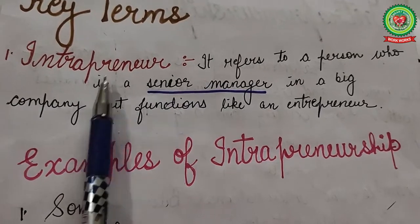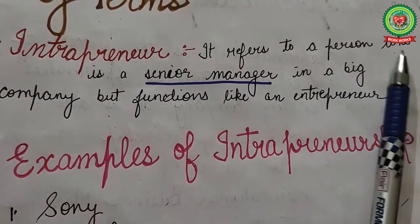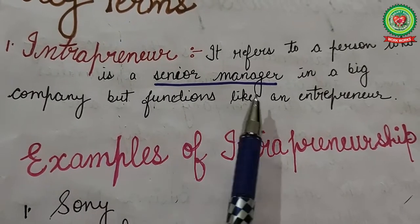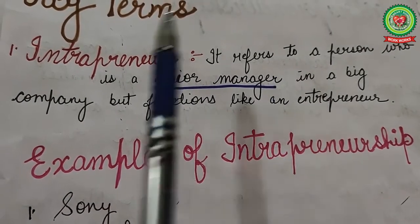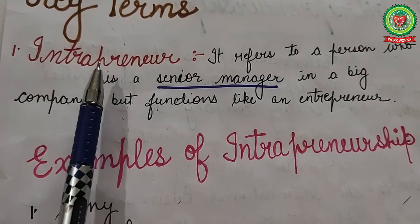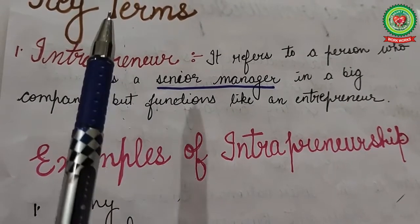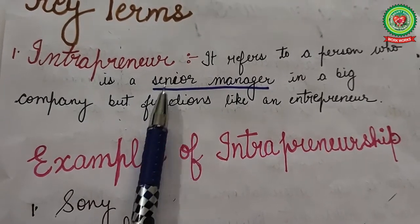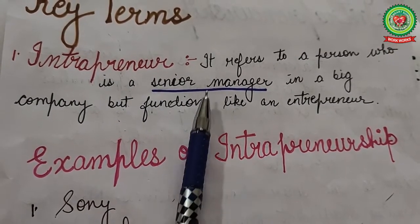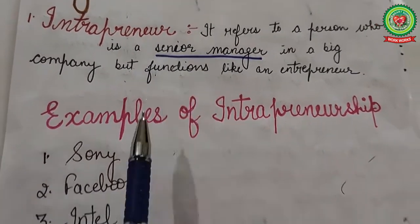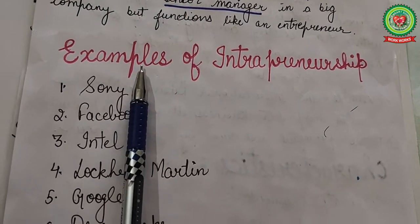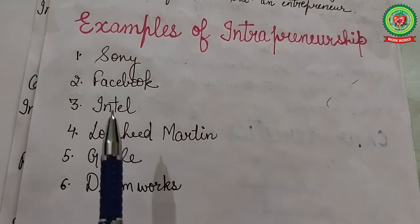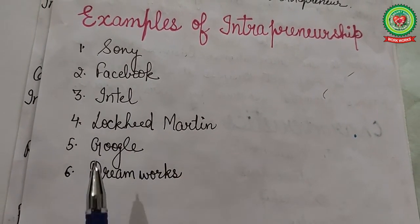The first key term is intrapreneur. It refers to a person who is a senior manager in a big company but functions like an entrepreneur. The company provides them the necessary freedom, funds and resources to introduce a new product or services in the market.